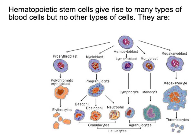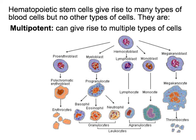Next question: if you have a hematopoietic stem cell, those can give rise to many types of blood cells. You can see here that the hematopoietic stem cell can give rise to erythrocytes — which are red blood cells — and all these different types of white blood cells: basophils, eosinophils, neutrophils, monocytes, platelets. All sorts of cells can derive from that hematopoietic cell. These are multipotent cells — they can become many different types of cells, but within a restricted lineage.